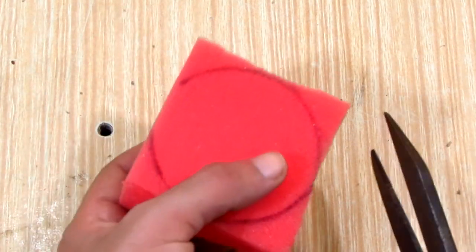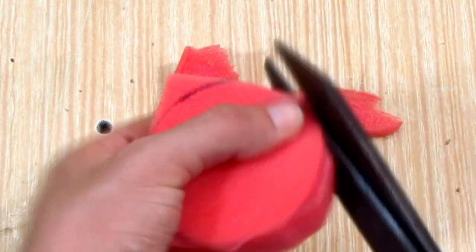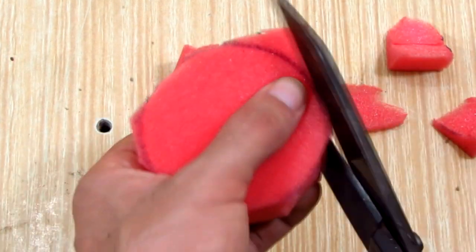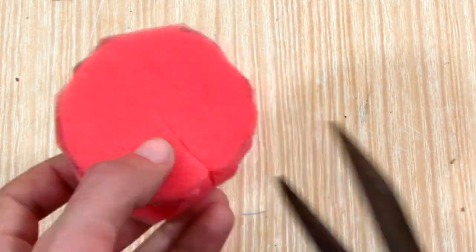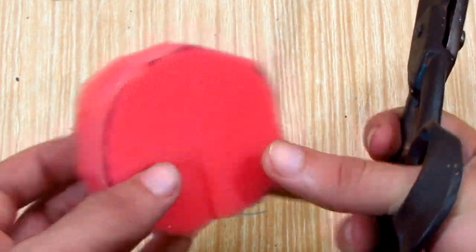With my heavy duty scissors I cut around the circle and it doesn't need to be a clean cut. Then I made a cut to fit the wire through.